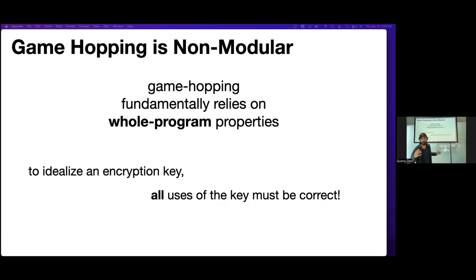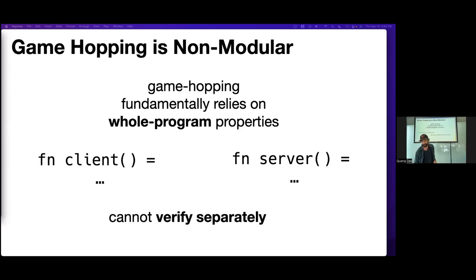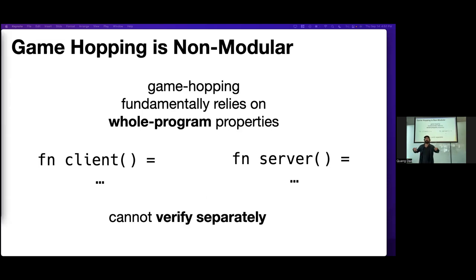Said another way, game hopping is fundamentally a whole-program technique. To idealize an encryption key, every use of the key has to be correct. Because of this, you cannot do standard verification of different parties separately. This is really unsatisfying — when you're writing normal code, you don't type-check or verify every function all at once; you check each part, make sure it's good, and put them together. We're looking for a better way.